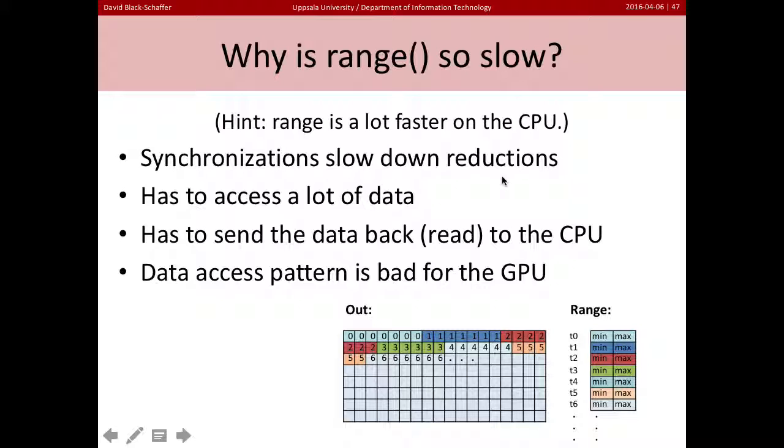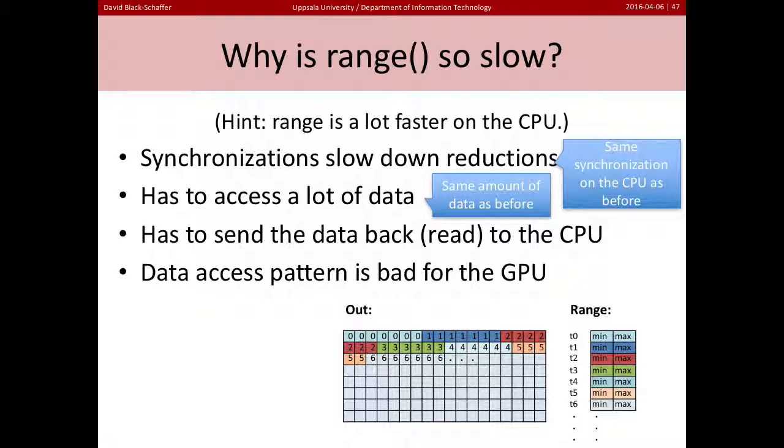Well, if we look at these options here - synchronization slower? It's actually the same synchronization we had on the CPU before. The GPU is just running a kernel and then synchronizing by sending it to the CPU. Do we have to access a lot of data? It's the same amount of data as before. We have to go over all of it. Are we sending back a lot of data? Well we're actually sending back much less data so that's not the issue.